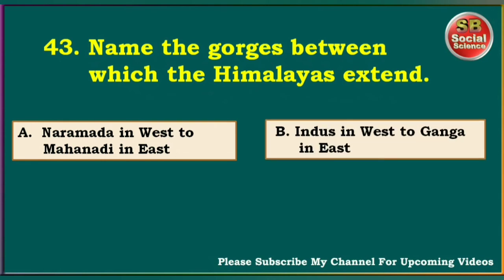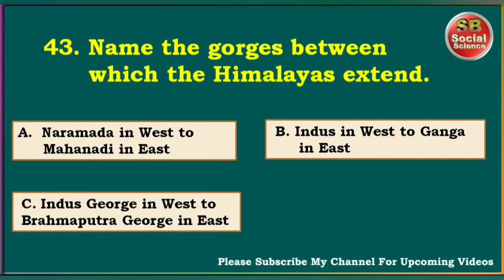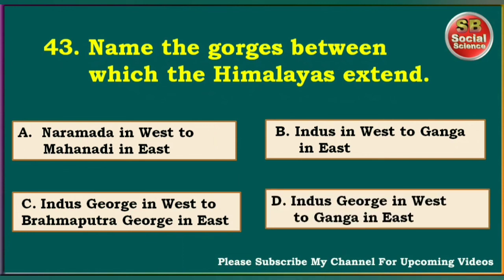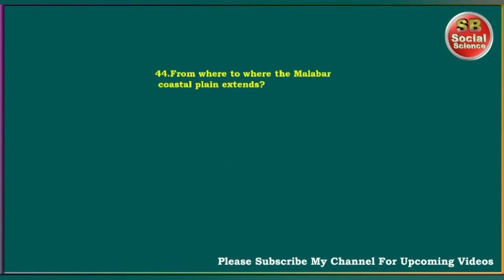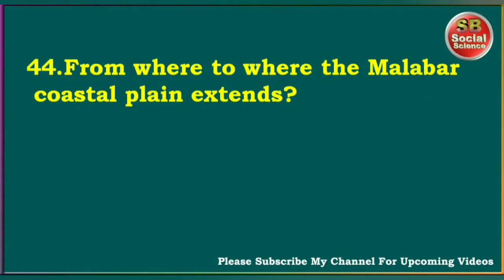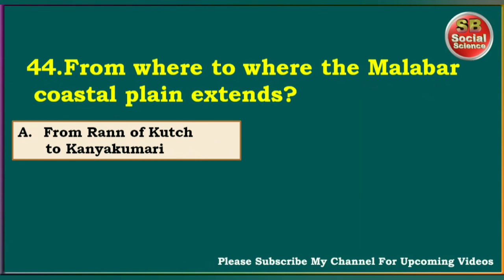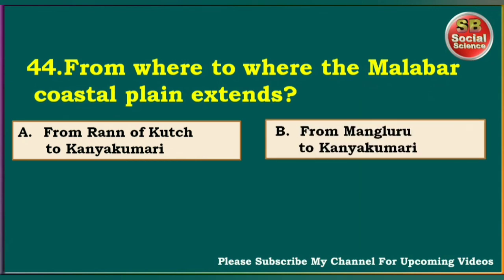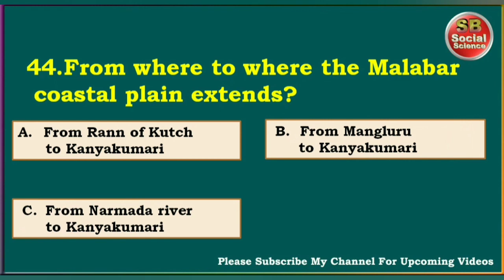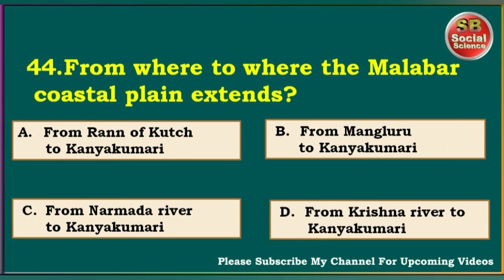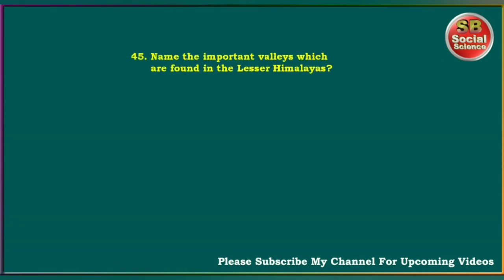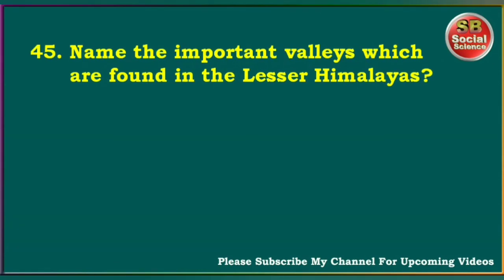Name the gorges between which the Himalayas extend. Narmada in West to Mahanadi in East, Indus in West to Ganga in East, Indus Gorge in West to Brahmaputra Gorge in East, Indus Gorge in West to Ganga in East. The answer is Indus Gorge in West to Brahmaputra Gorge in East. From where to where does the Malabar Coastal Plain extend? From Rann of Kutch to Kanyakumari, from Mangalore to Kanyakumari, from Narmada River to Kanyakumari, from Krishna River to Kanyakumari. The answer is from Mangalore to Kanyakumari.